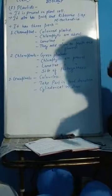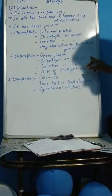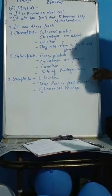The second one is chloroplast. You know chloroplast already. This is green plastid in which chlorophyll is present. Lamellae is also present. And this is the photosynthesis site. That means this is where the plant makes food.